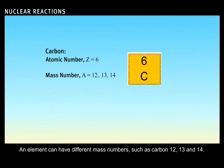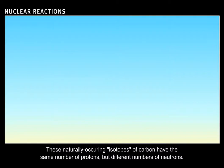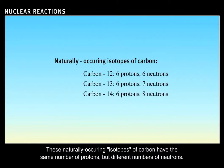An element can have different mass numbers, such as carbon-12, 13, and 14. These naturally occurring isotopes of carbon have the same number of protons, but different numbers of neutrons.